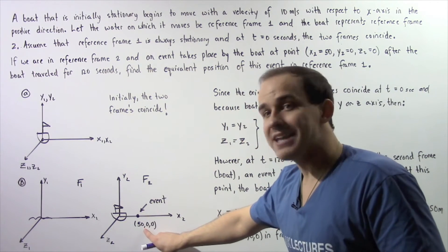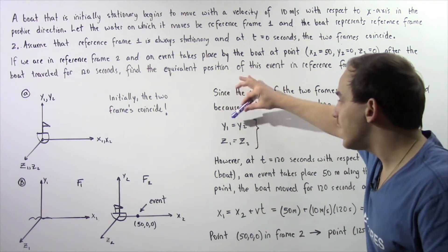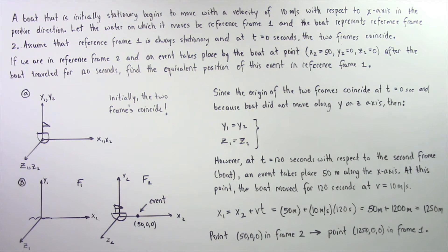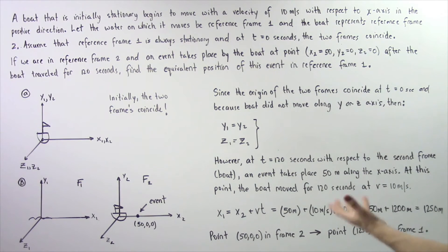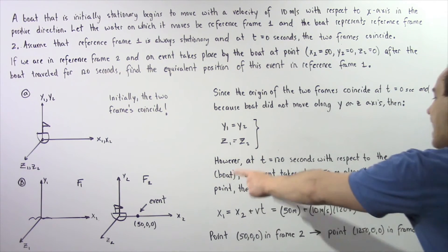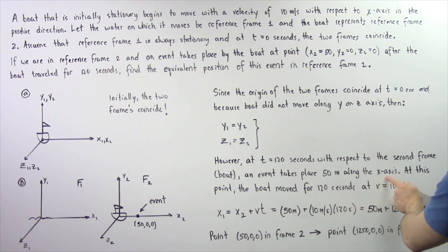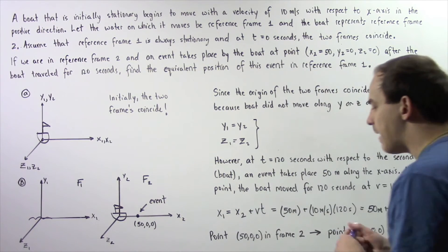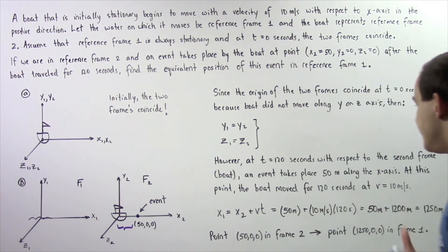Since y2 and z2 are both zero, that implies y1 and z1 are also zero. Now, what about x1? At a time of 120 seconds, with respect to the second frame of the boat, an event takes place that is 50 meters along the x-axis in the positive direction from the origin of frame number two, as seen in the diagram. So this distance is 50 meters.